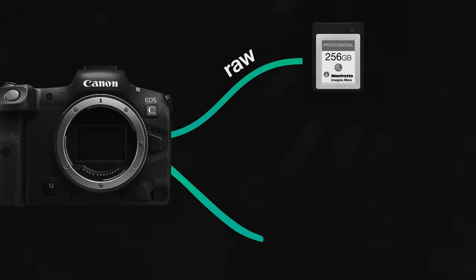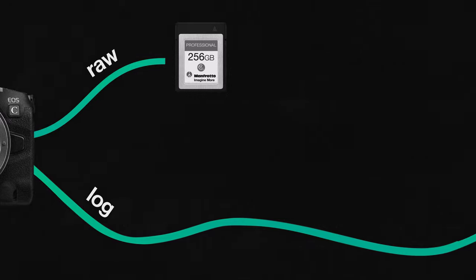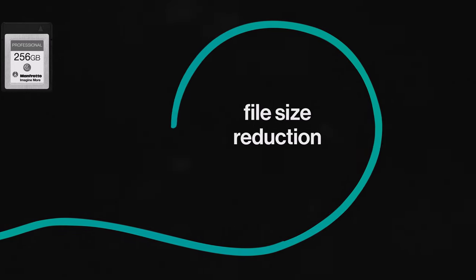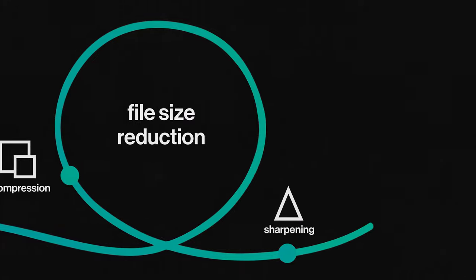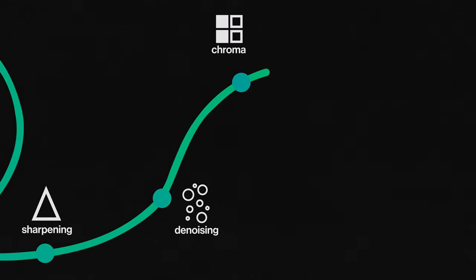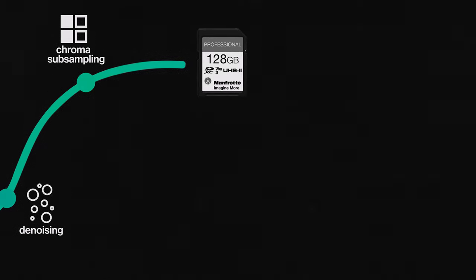There's also some other things at play when we shoot in a non-raw format. To get the best image straight out of the camera and keep file sizes as low as possible, most cameras do a bunch of compression, sharpening, and noise reduction, as well as storing that colour information in a way that discards information you can't perceive — as long as you don't grade or manipulate the footage.